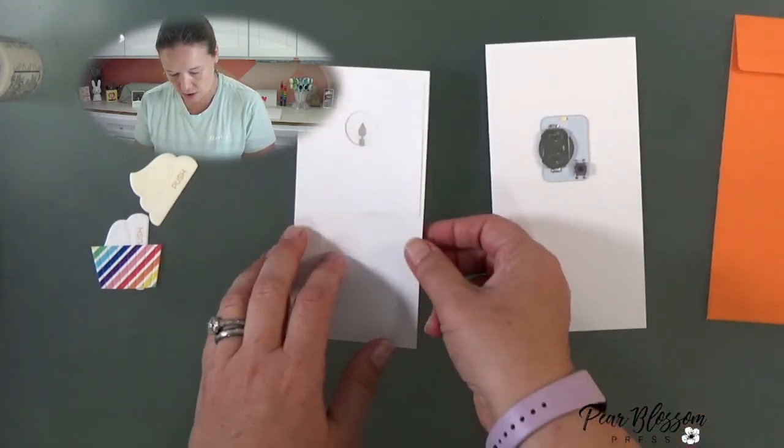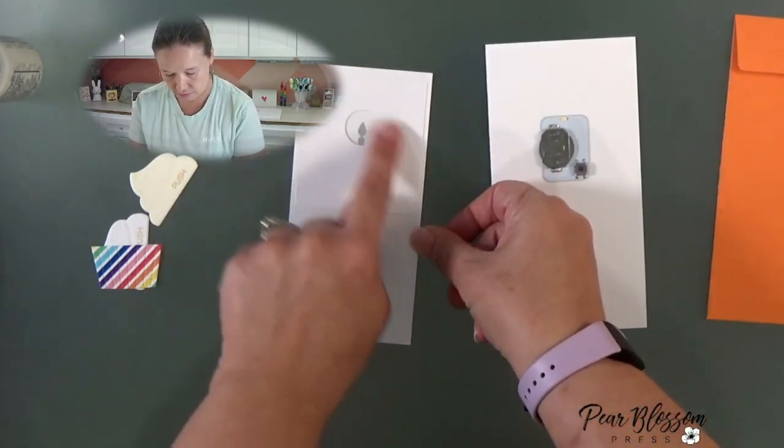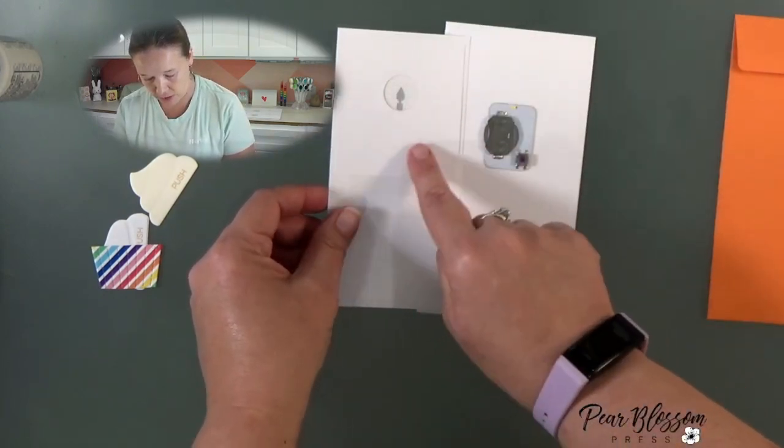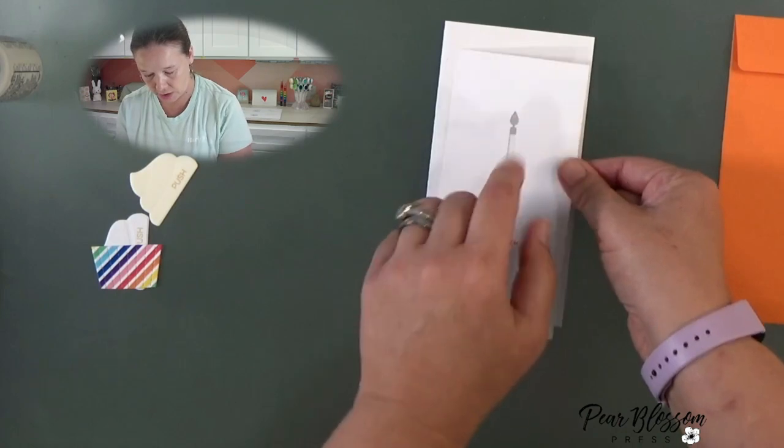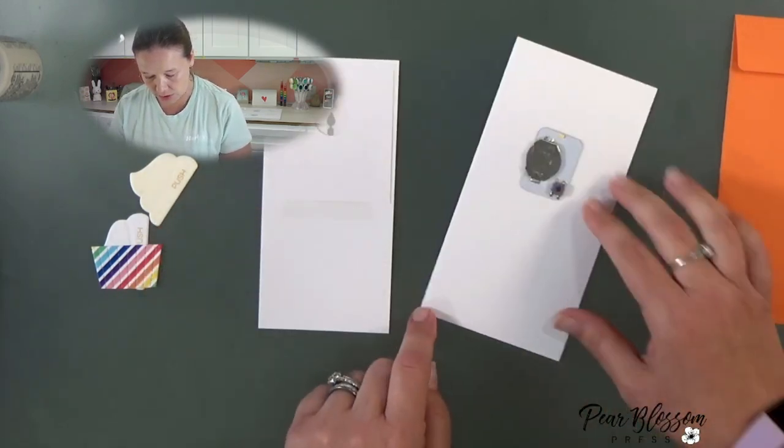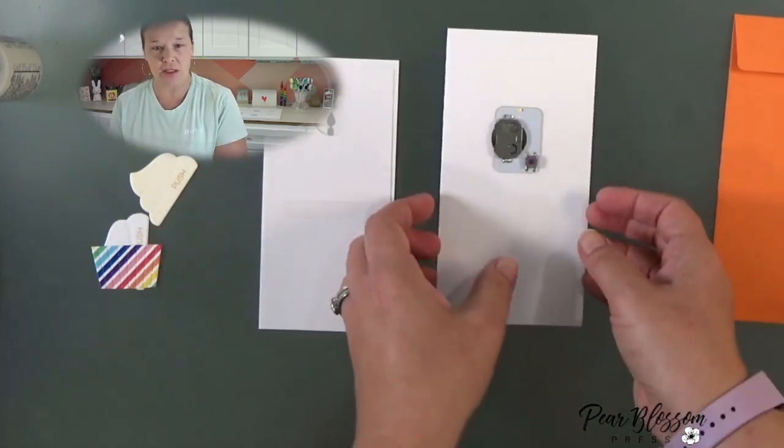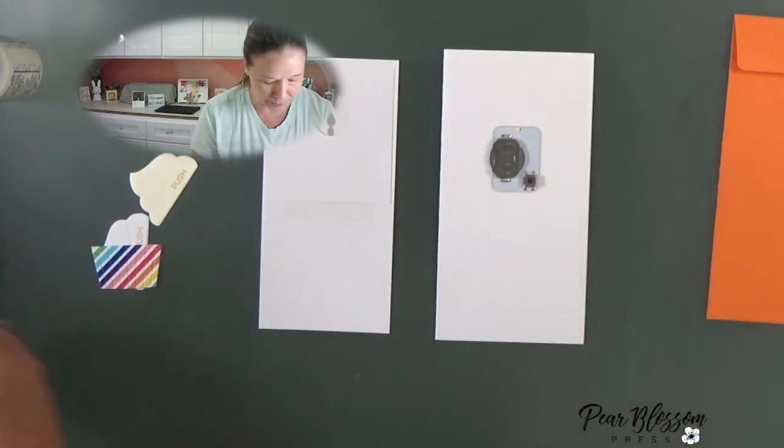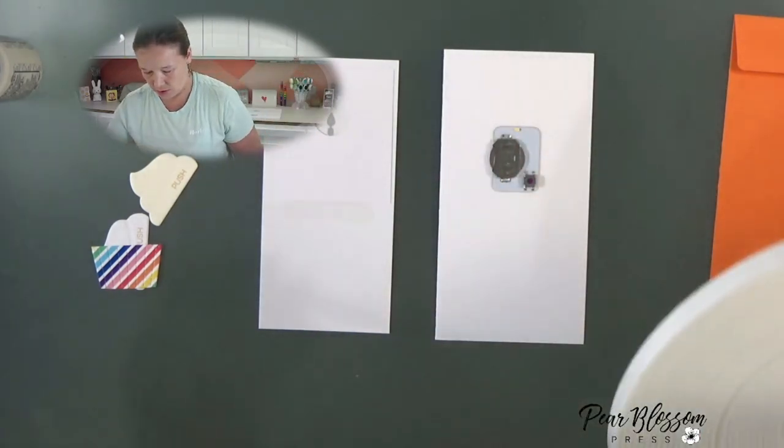And then all we're going to want to do is add some foam tape around the edges. You do want to make sure that you don't put foam tape right here because this is where the light's going to be. The reason we're using that double thick foam tape is the thickness of the battery is about the same height as two layers of foam tape.